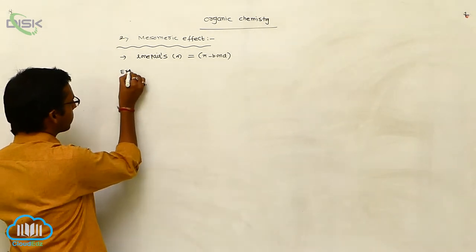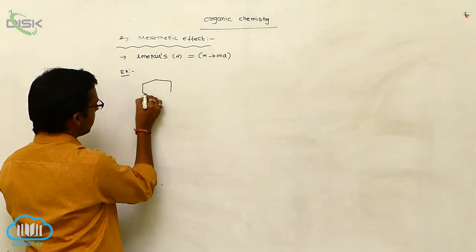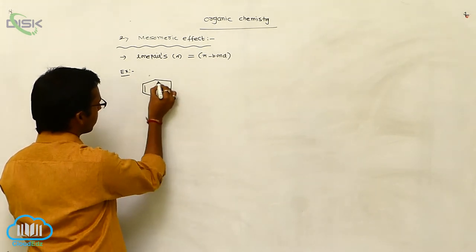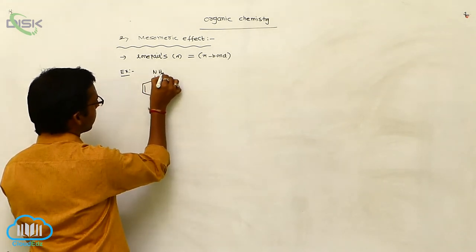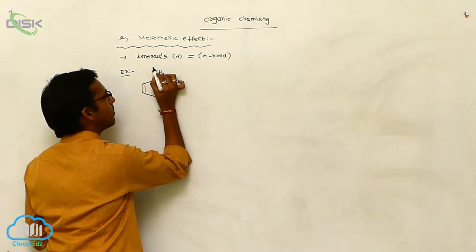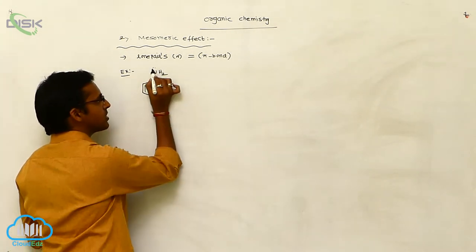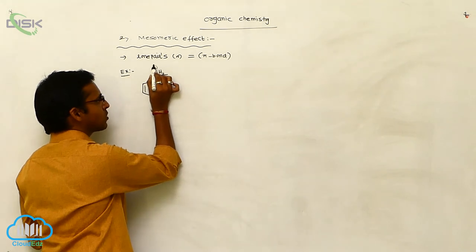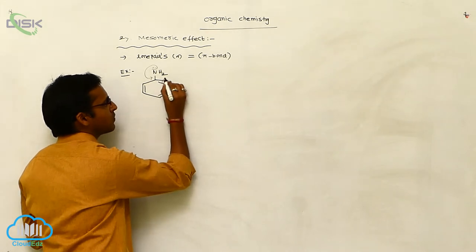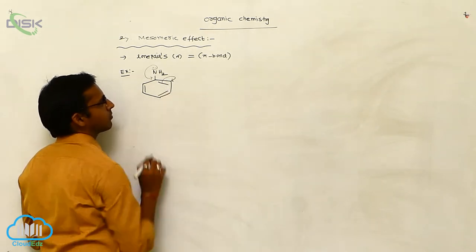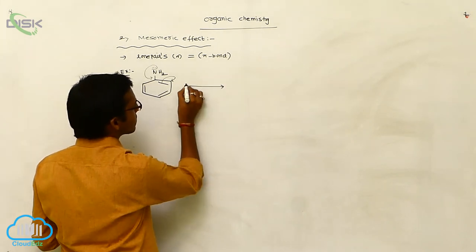For example, consider benzene. On benzene, consider one amine group. This amine group contains a lone pair. The presence of this lone pair causes it to shift, and whenever the lone pair is shifted, the pi bond shifts towards the carbon. It shows different types of resonating structures.